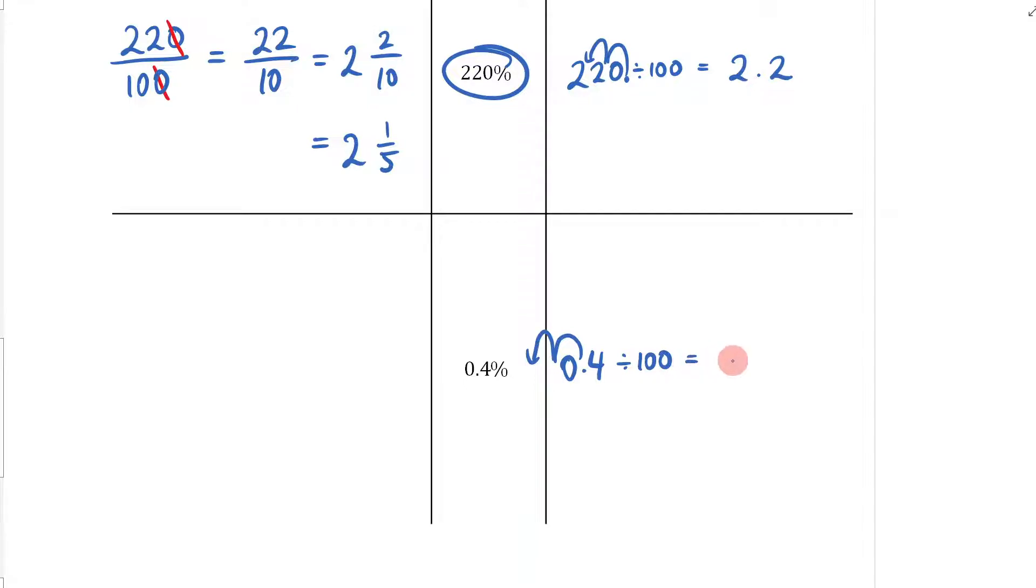So now it's going to be 0 point... remember there's a zero there, right? So it's 0.004. That's my answer, 0.004.